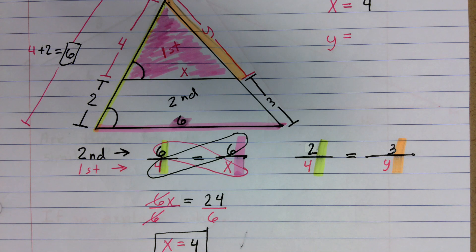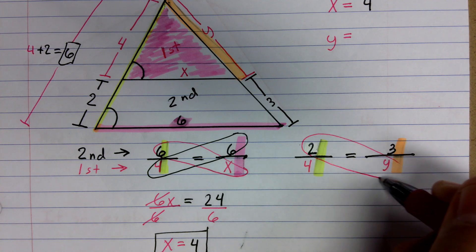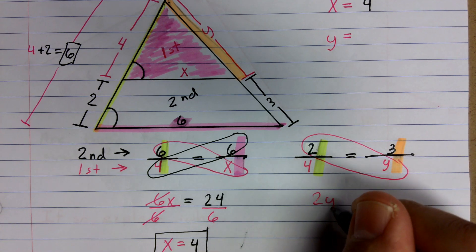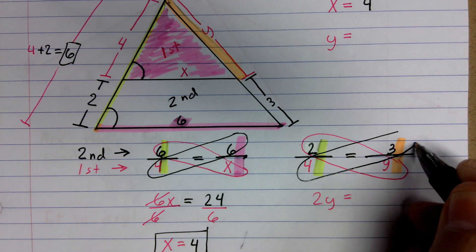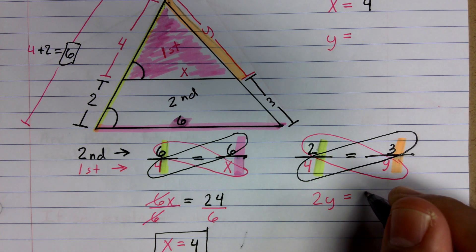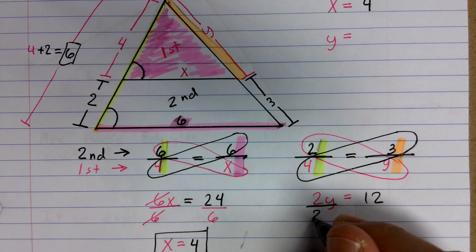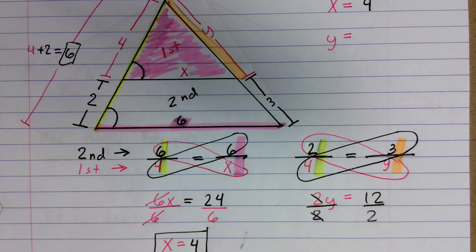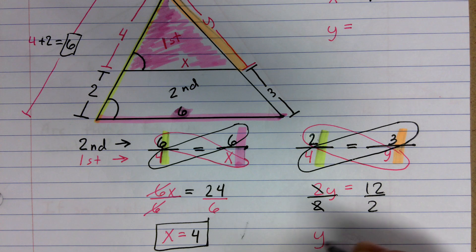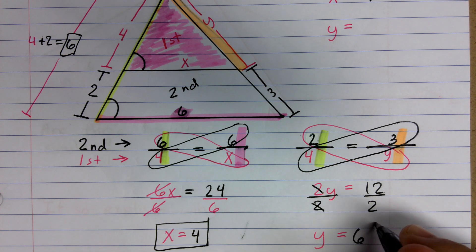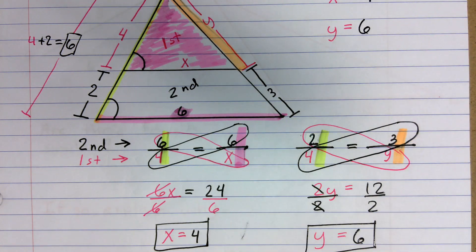And now we're going to go ahead and we're going to cross multiply these numbers. Just like before. So I have 2 times y. That gives me 2y. And then I have 4 times 3. That gives me 12. And then I divide by 2 on both sides to get rid of the coefficient in front of y. And I end up with y is equal to 6. So I'm going to go ahead and go up here and write a 6.